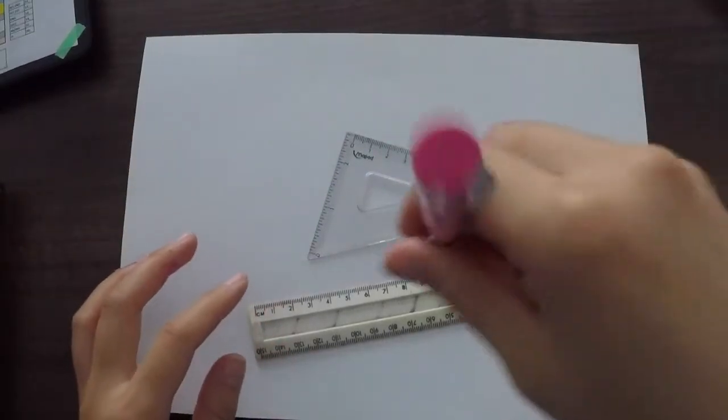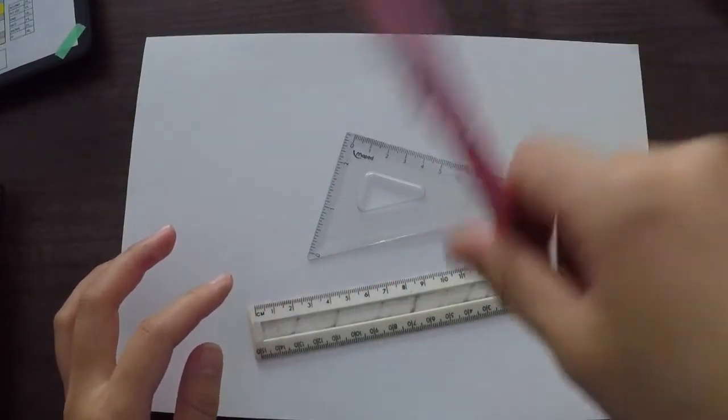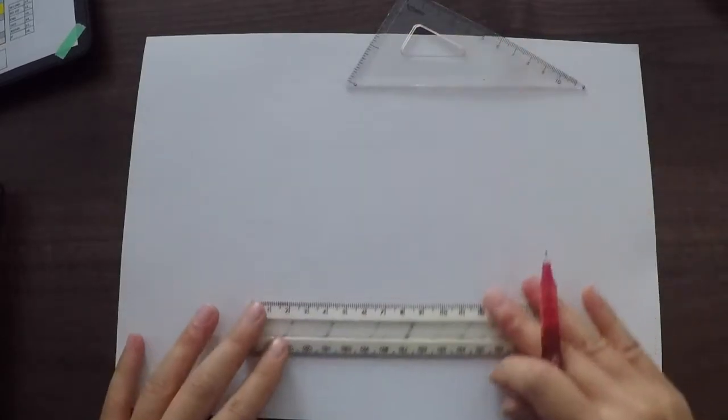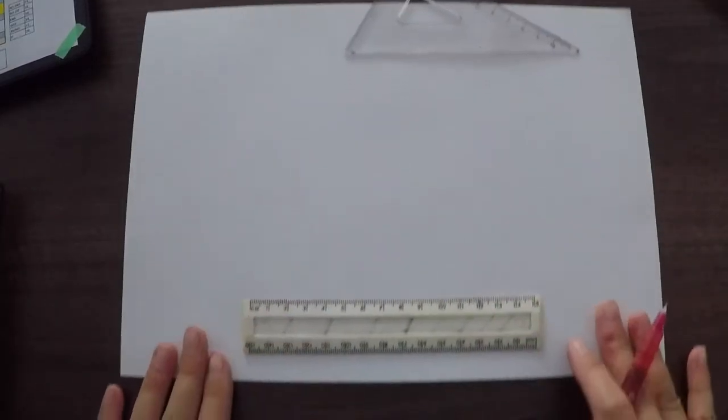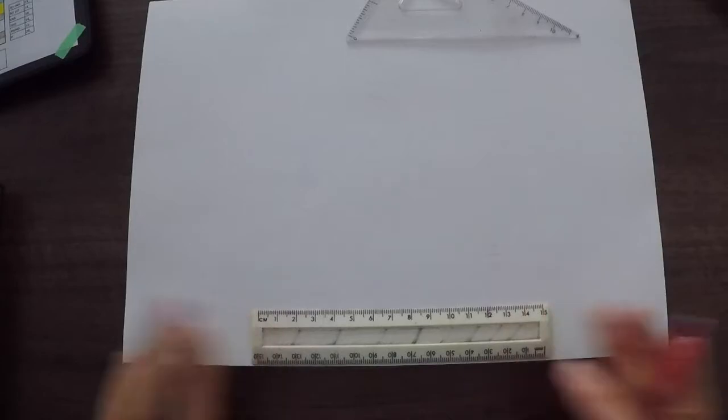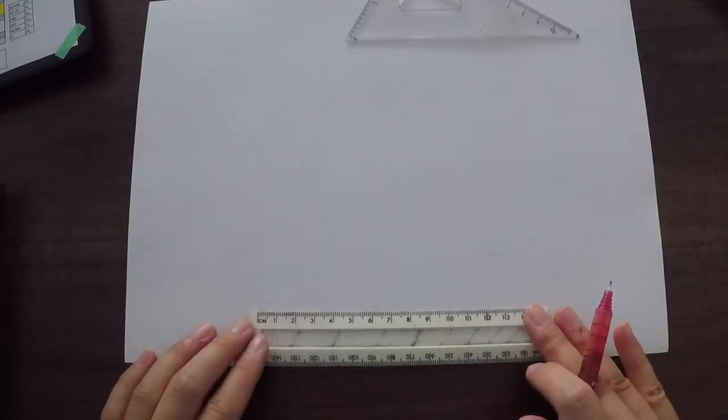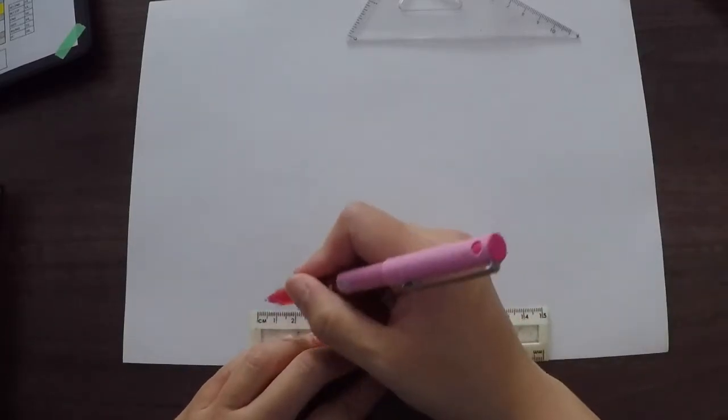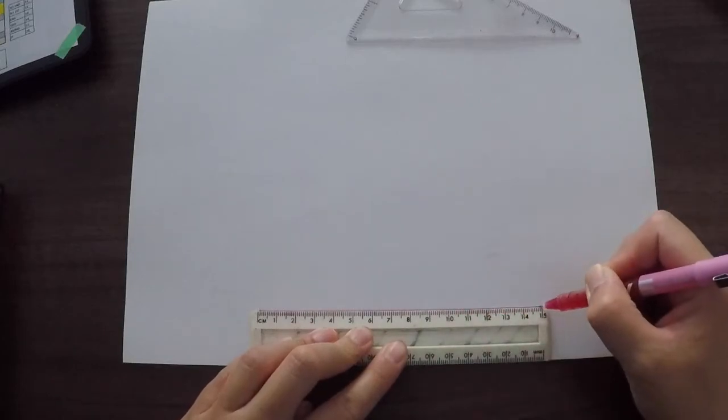So construction line meaning drawing lightly and I'm using a pink pen to represent that. So first things first I'm going to line up my ruler down the bottom here. And then I'm going to draw a horizontal line like so.